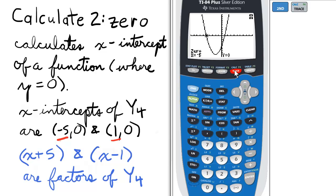So press 2nd and trace for the calc menu, and then 2 to calculate the intercept.